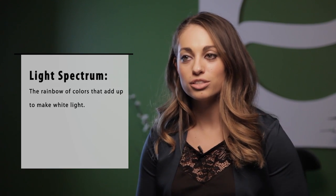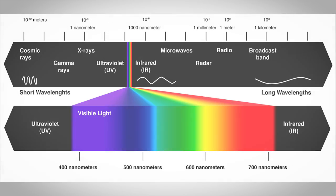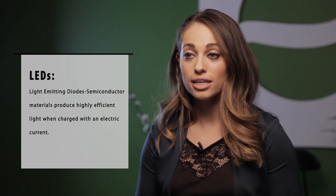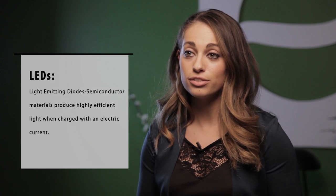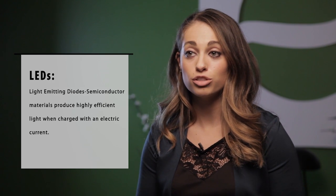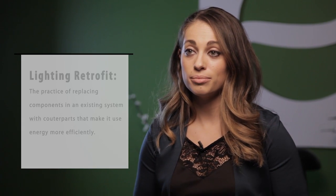The light spectrum is the rainbow of colors that add up to make white light. LEDs, or light emitting diodes, are solid semiconductor devices that emit light when charged with an electric current. They are highly efficient.